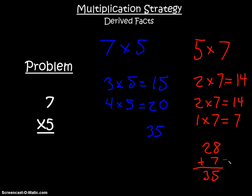So either way, I find my answer is 35. It's up to you. Is it easier for you to use derived facts with 7 groups of 5, or 5 groups of 7? You could use different derived facts.